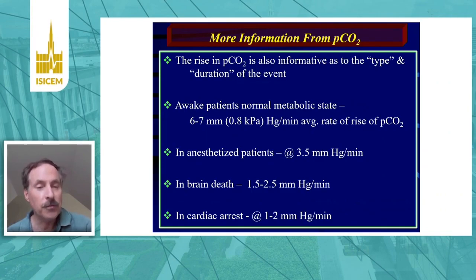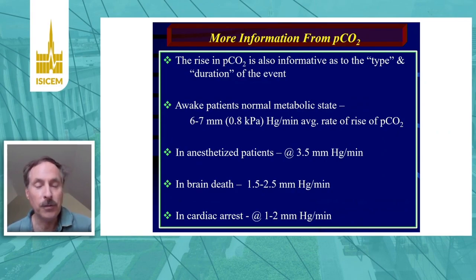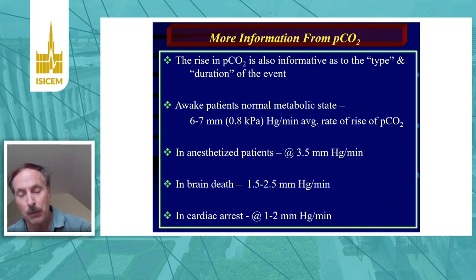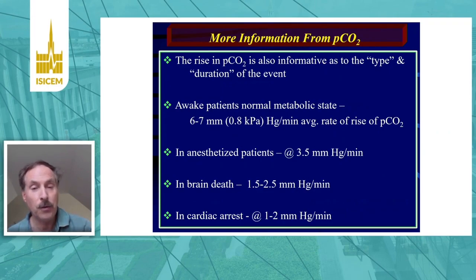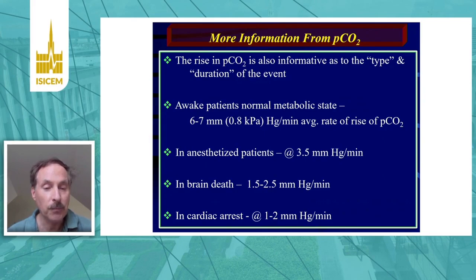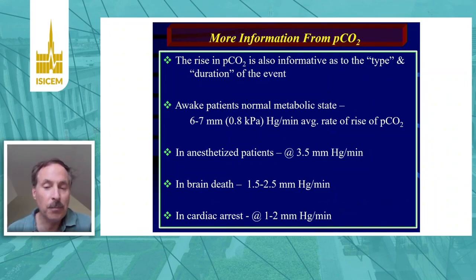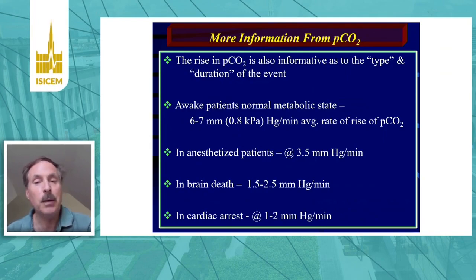In awake patients who fall from an immediate cardiac arrest but were otherwise of normal physiology, there would be a rise in PCO2 of about one to two millimeters of mercury per minute. This contrasts to patients who are awake, alive, and breath-holding in a completely normal metabolic state — they typically produce about six to seven millimeters of mercury per minute rise in PCO2. In between are patients such as anesthetized patients or brain death. With the cardiac arrest rate of two millimeters of mercury per minute, a PCO2 of 60 — a rise of 20 from the normal value of 40 — would have taken about 10 to 20 minutes, representing the probable duration of the arrest.